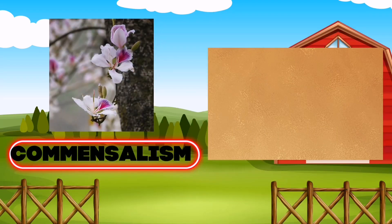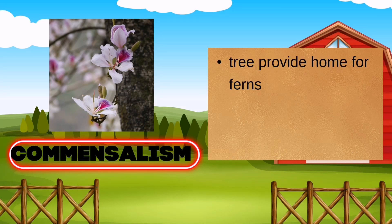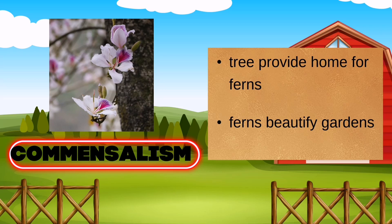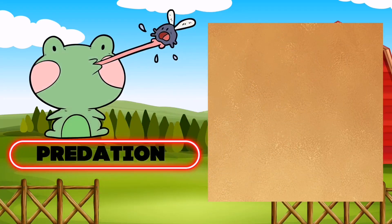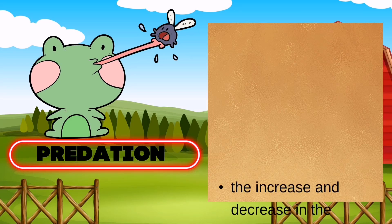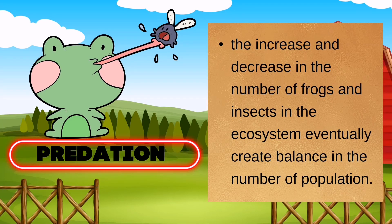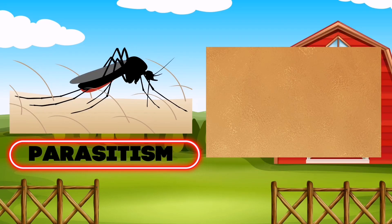The next interaction is commensalism. The possible effect of this interaction is that trees provide a home for ferns or orchids, and ferns beautify gardens. Next is predation — the possible effect is that the increase and decrease in the number of frogs and insects in the ecosystem eventually creates balance in the population.